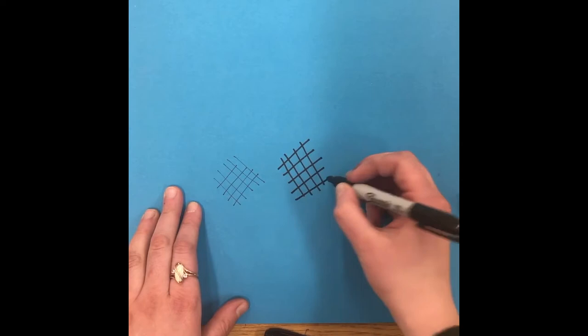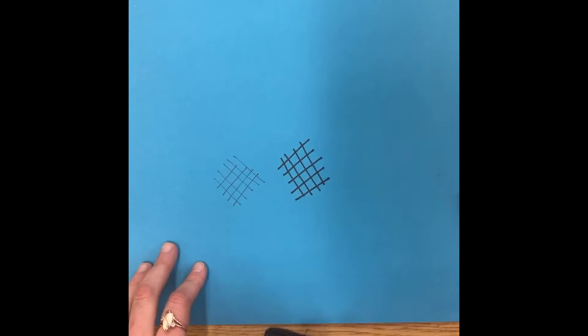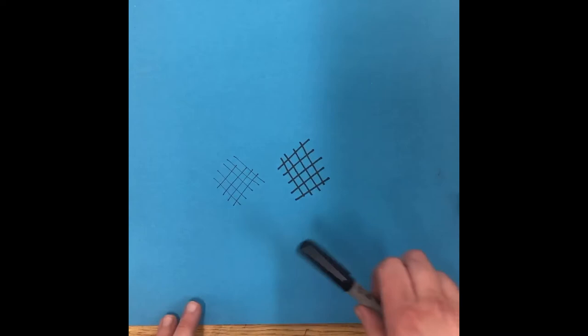So the thicker, wider Sharpie pin marker looks much darker visually versus the thinner one looks much lighter visually. Even though they're both just black markers, the lines, the closer they are together, the darker something looks.